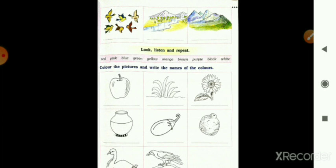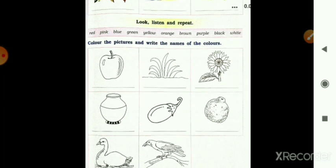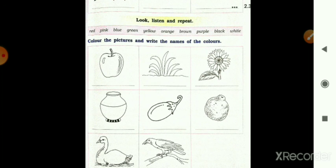So yahan pe aapko kya karna hai? Look and listen and repeat. Phir se red, pink, blue, green, yellow, orange, brown, purple, black, white. Colors ke naam hai. Aur wo kya karna hai? Color the picture and write the names of colors.